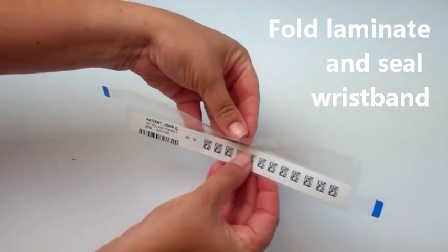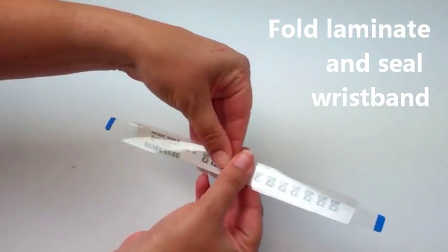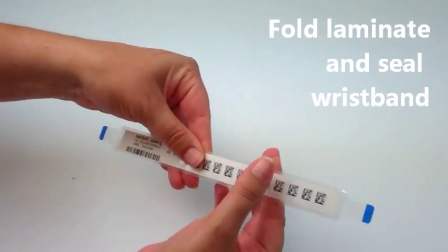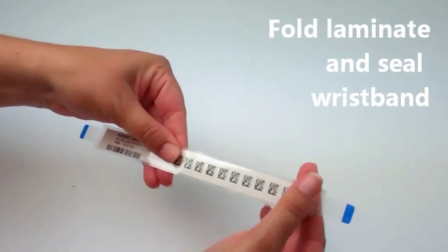Fold over the laminate in the middle of the band, then press down from the middle outward to seal the wristband. Make sure there are no bubbles or creases.